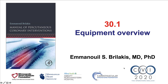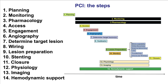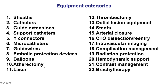Hi, this is Manos Brulakis from the Minneapolis Heart Institute and the Cardiovascular Innovations Foundation, presenting video 30.1 for the Manual of Percutaneous Coronary Interventions. This video provides an overview of the equipment used for Percutaneous Coronary Intervention. There are 14 steps for PCI, with equipment being necessary in all of those steps, and these are the 22 categories of equipment that will be discussed one by one in this video.